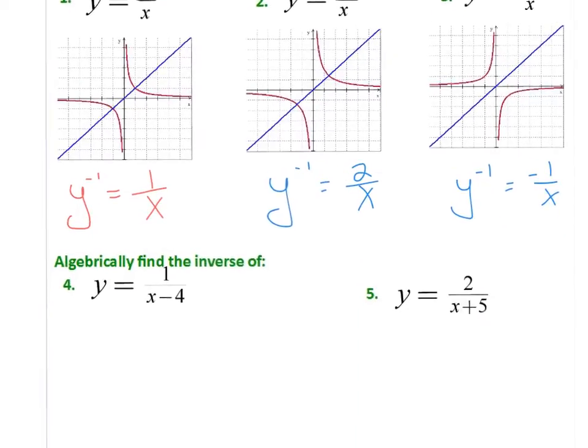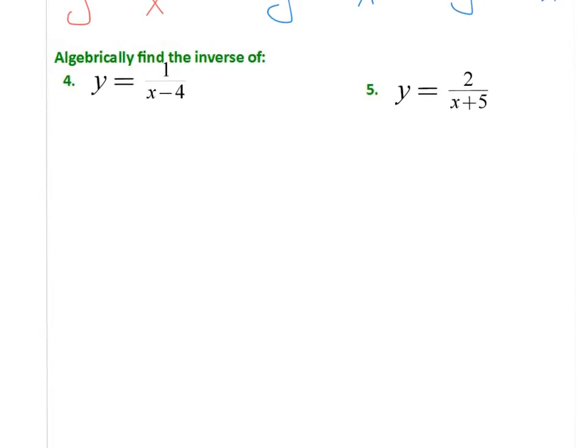So with that in mind, let's algebraically find the inverses of these equations. What I'm going to do is I'm going to take y equals 1 over x minus 4. Go ahead and write that down on some paper right now. We'll pause the video for you to write down 4 and 5.